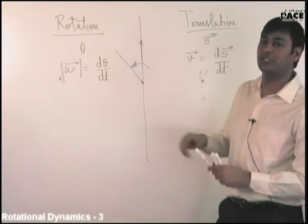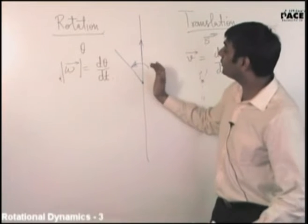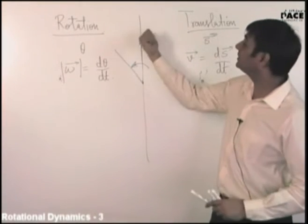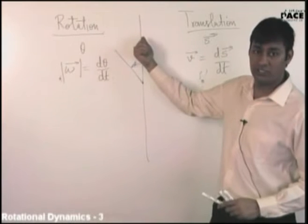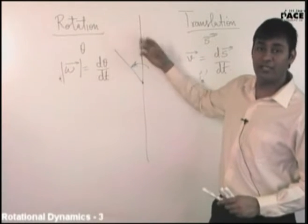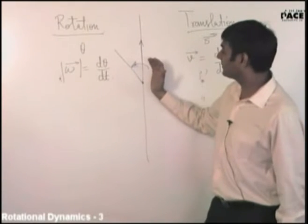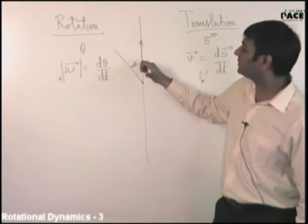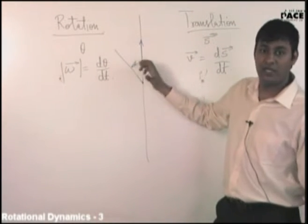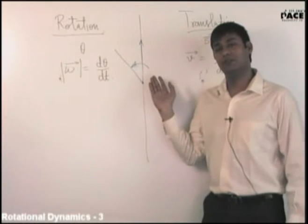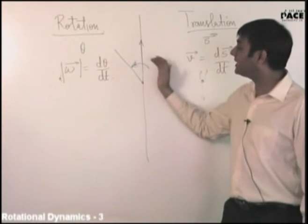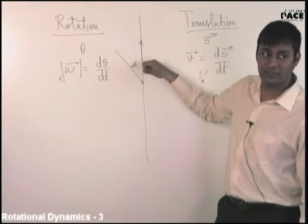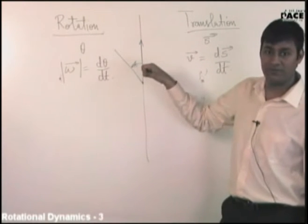Calling it clockwise or anticlockwise creates confusion. For you it is anticlockwise, but for a person on the other side of a transparent board it will be clockwise. However, according to both observers, when you curl the fingers in the direction of rotation the thumb points in the same direction — towards you. So both agree on the assigned direction.